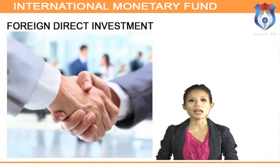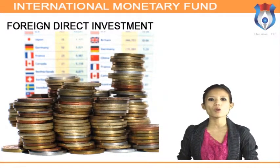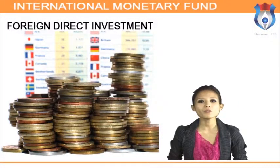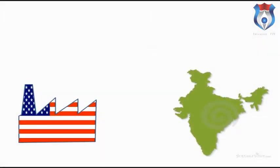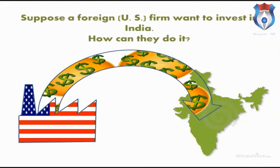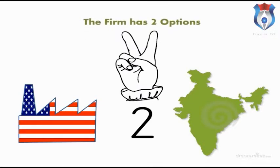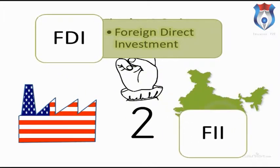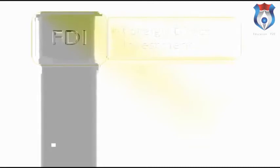Foreign direct investment (FDI) is a fund flow between countries in the form of inflows or outflows, by which one party gains benefit from the investment while another exploits the opportunity to improve productivity and performance. For example, consider a company in America that wants to invest in India. The firm has two options: the first is FDI — foreign direct investment — and the second is FII — foreign institutional investors.